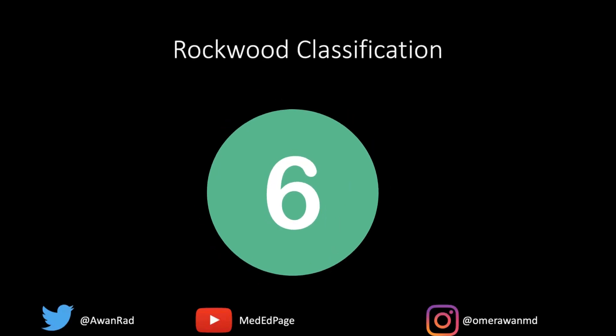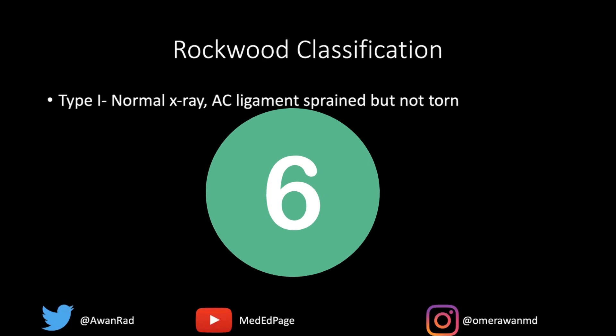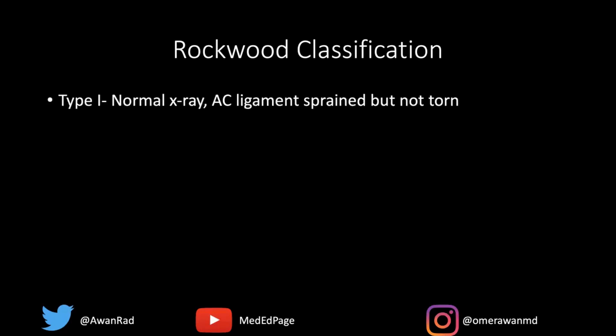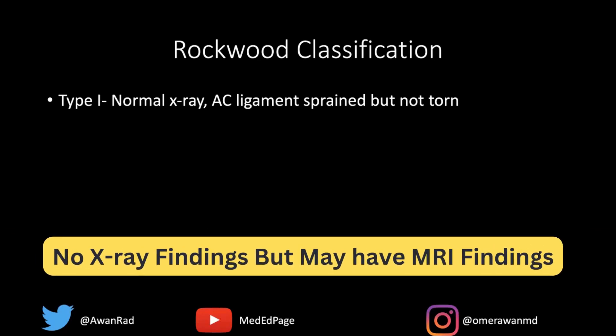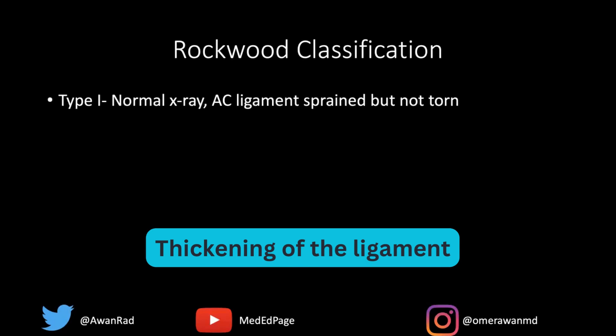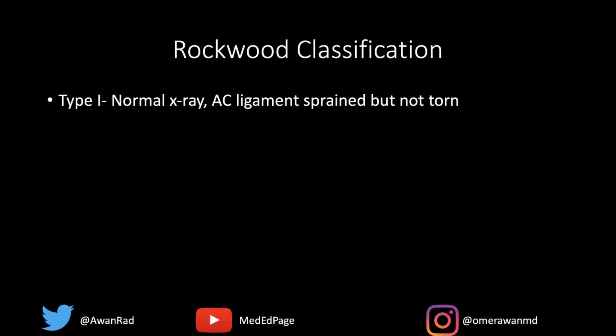There is a Rockwood classification that is very important for residents and students to understand. There are six types of AC joint injuries: type 1 through type 6. A type 1 is when the acromioclavicular ligament is sprained but not torn. So on x-ray, we're not going to see anything — there's no such thing as a type 1 injury visible on radiography. On MRI, you may see thickening of the ligament and intermediate signal suggesting a sprain where the ligament is otherwise intact and not torn. So on MRI you could call a type 1 AC joint injury, but on x-ray and even CT, we would never suggest a type 1 injury.